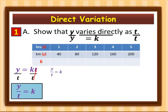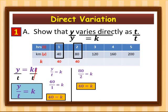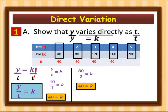For column 1, y is 40 and time is 1, so k equals 40. For column 2, y is 80 and time is 2, so k equals 80 over 2, which is 40. For column 3, 120 over 3 is 40; column 4, 160 over 4 is 40; and column 5, 200 over 5 is also 40. All constants are the same, confirming k as the constant of variation.